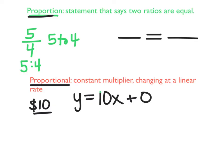So for it to be proportional, it must have this multiplier or the constant rate. Okay, so this one would be proportional.